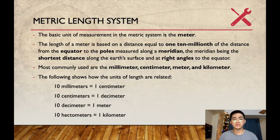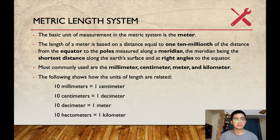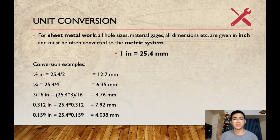The most commonly used metric units are the millimeter, centimeter, meter, and kilometer. The following shows how the units of length are related: 10 millimeters equals 1 centimeter, 10 centimeters equals 1 decimeter, 10 decimeters equals 1 meter, and 10 hectometers equals 1 kilometer. For sheet metal work, all hose sizes, material gauges, and all dimensions are given in inches and must often be converted to the metric system. For example, 1 inch equals 25.4 millimeters.